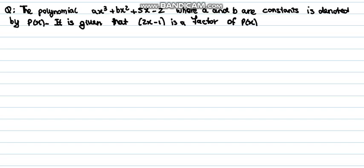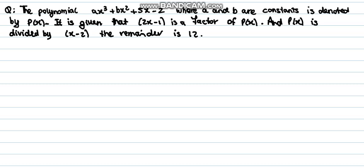It is given that 2x - 1 is a factor of p(x), and p(x) is divided by x - 2, the remainder is 12. So our first part says find the values of a and b.